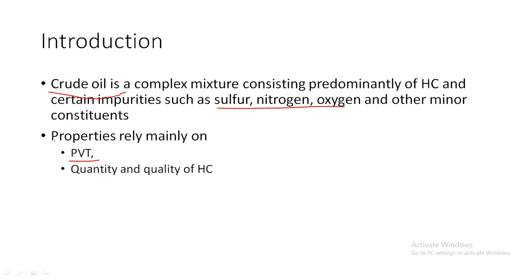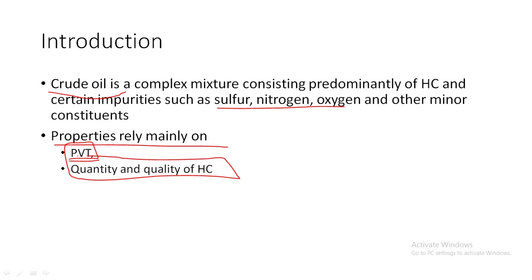The properties of crude oil mainly rely on two parameters. The first parameter includes three things: P, V, and T — which are pressure, volume, and temperature. According to me, my favorite parameter of a reservoir is pressure, because as pressure varies, so many properties come into picture in the reservoir or in the crude oil.